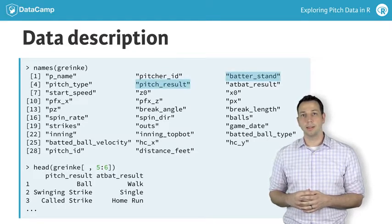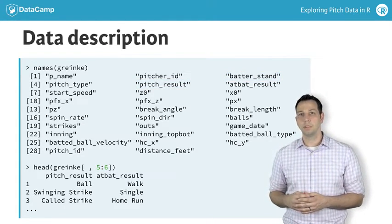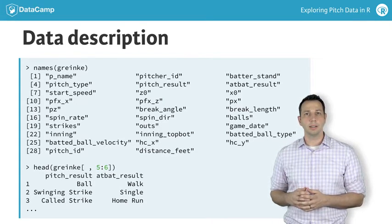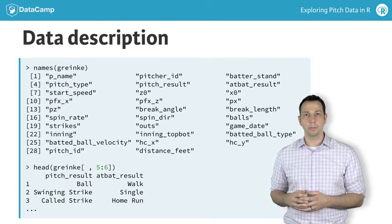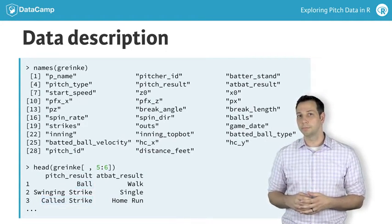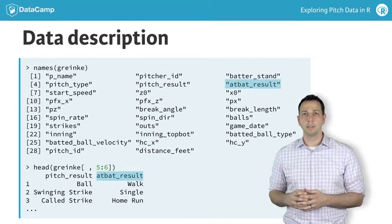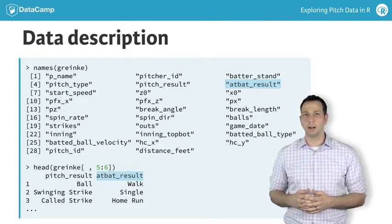There's also information on batter handedness and the ultimate outcome of each pitch that's thrown. For example, if the batter swung and missed, this is included in the data in the variable pitch result, with the entry swinging strike. Alternatively, if the batter didn't swing, the data include information on whether the pitch was called a ball or a strike by the umpire. Finally, there's information on the outcome of the at-bat, such as whether the batter hit a home run, popped out, walked, struck out, or any number of other general baseball outcomes.